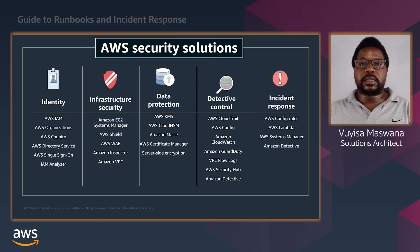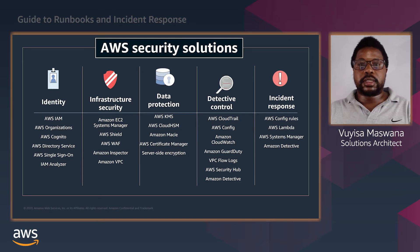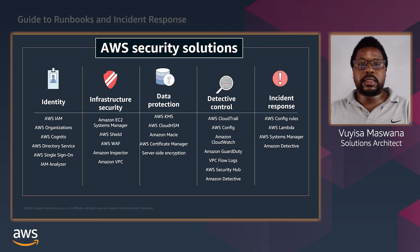AWS has the broadest and widest security tools. We start from the identity services, which are the foundation services, and then have the protection services, which would protect the infrastructure and also protect the data. We also have the detective services, which will continuously detect issues on your AWS environment. And lastly, we have the incident response services, which would help with incident response and recovery — which is the topic of what we are discussing today.